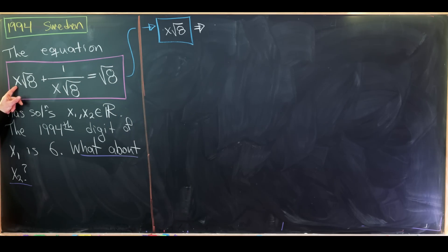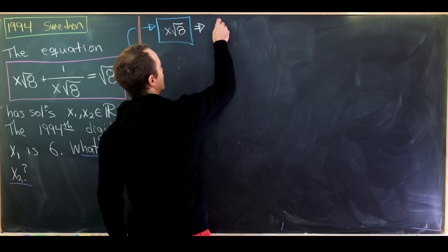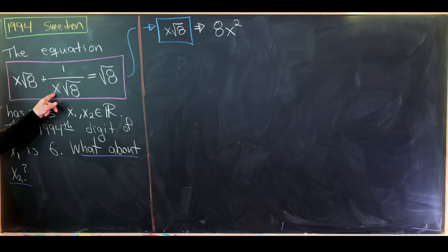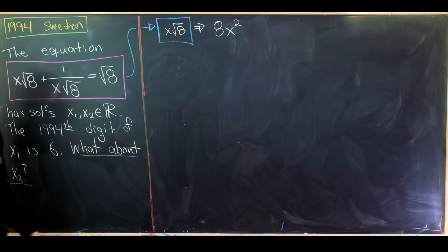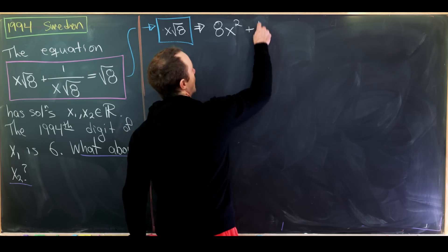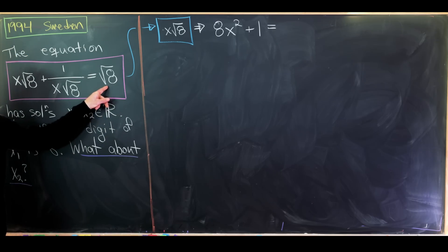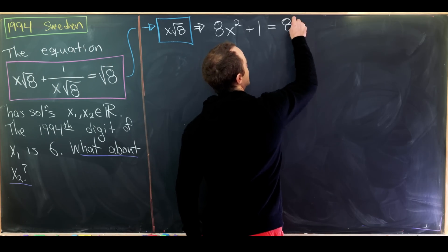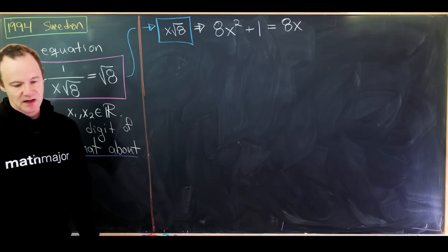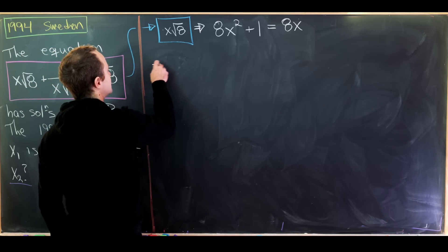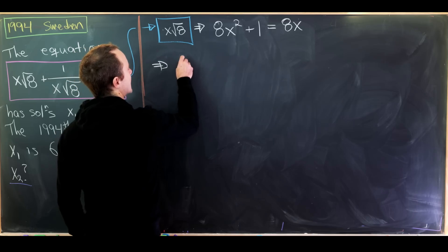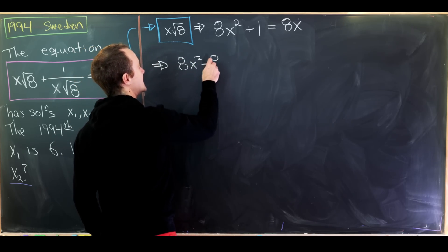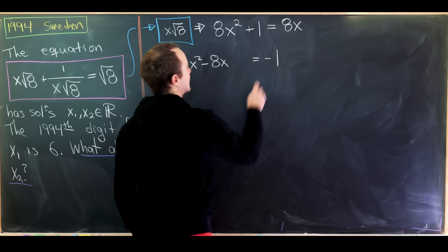Here we'll have x squared times the square root of 8 squared. In other words, we'll have 8x squared. Here we'll have 1 over x times the square root of 8 times itself, in other words just the number 1. And then finally over here we will have 8 times x. Now let's move some things around. We'll get 8x squared minus 8x equals negative 1.